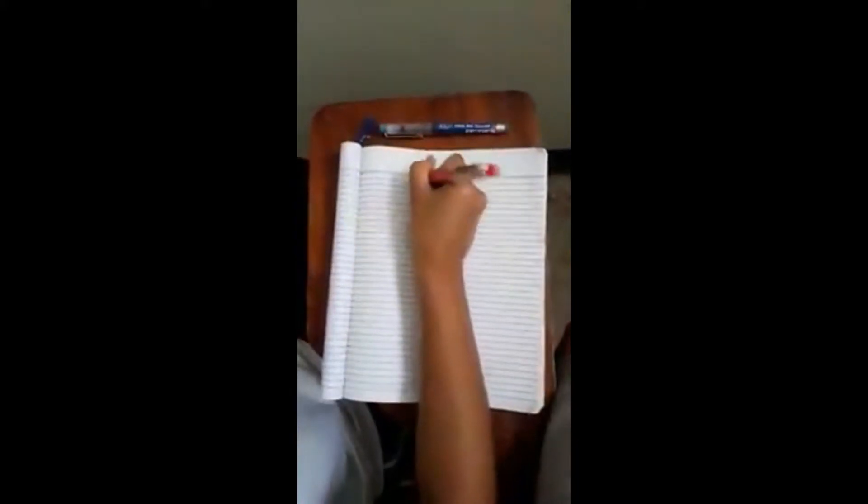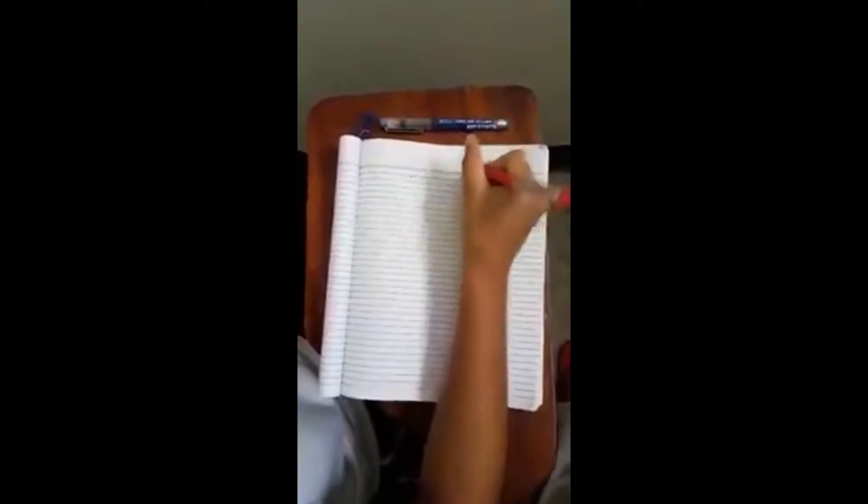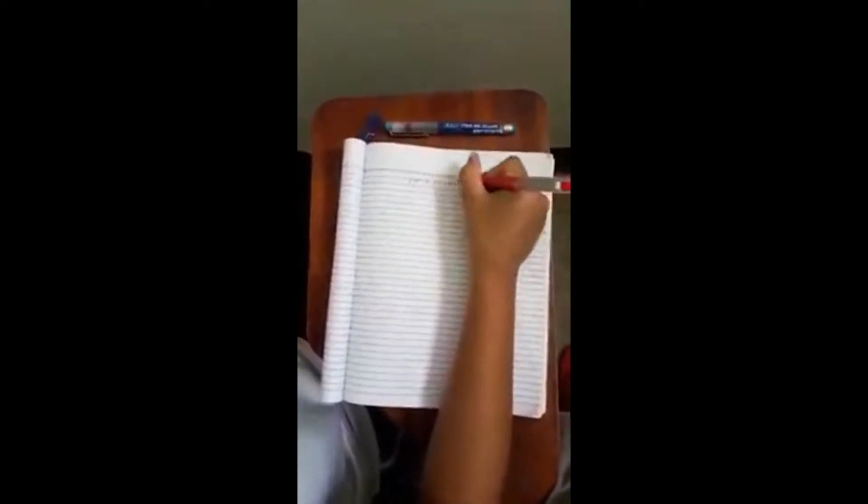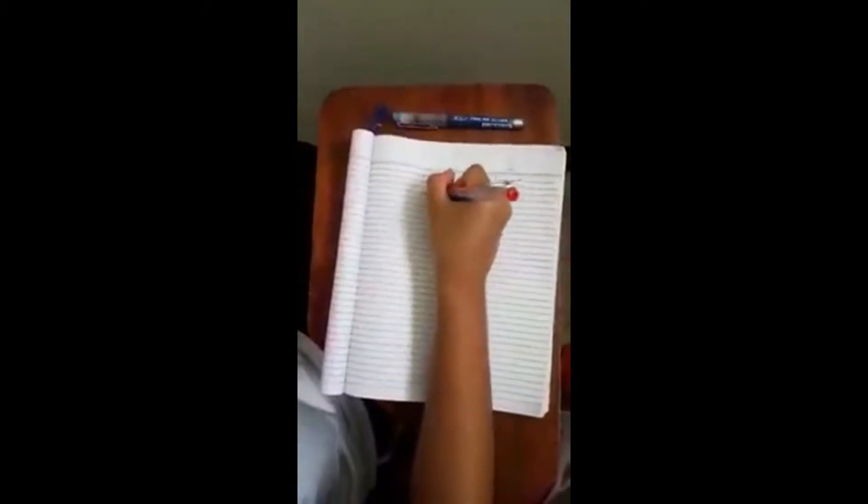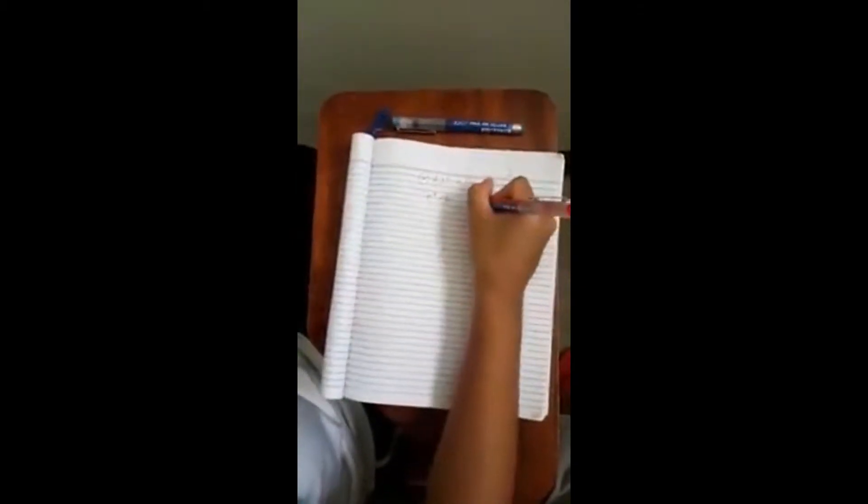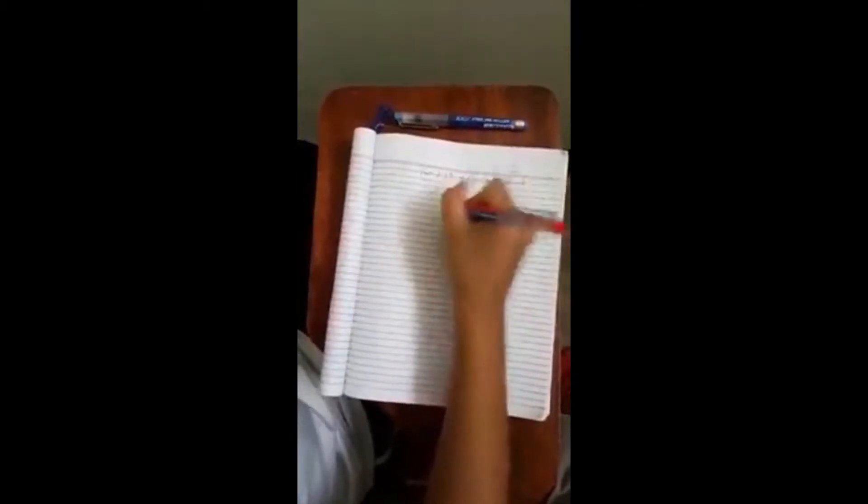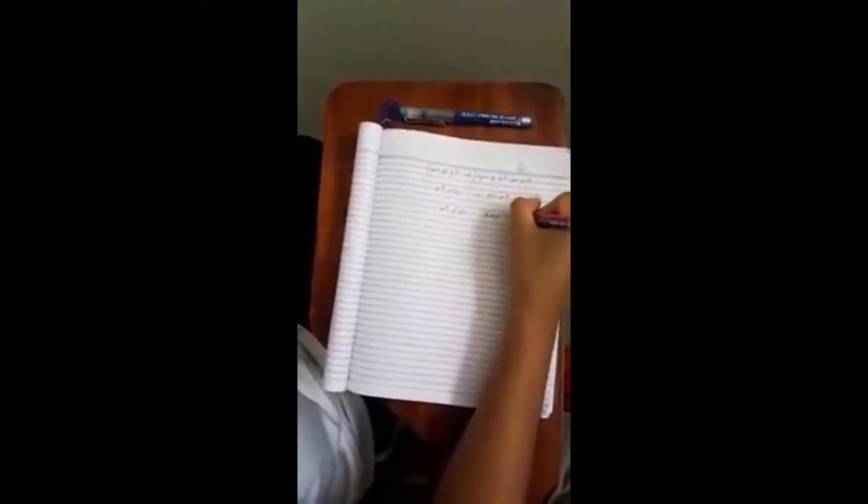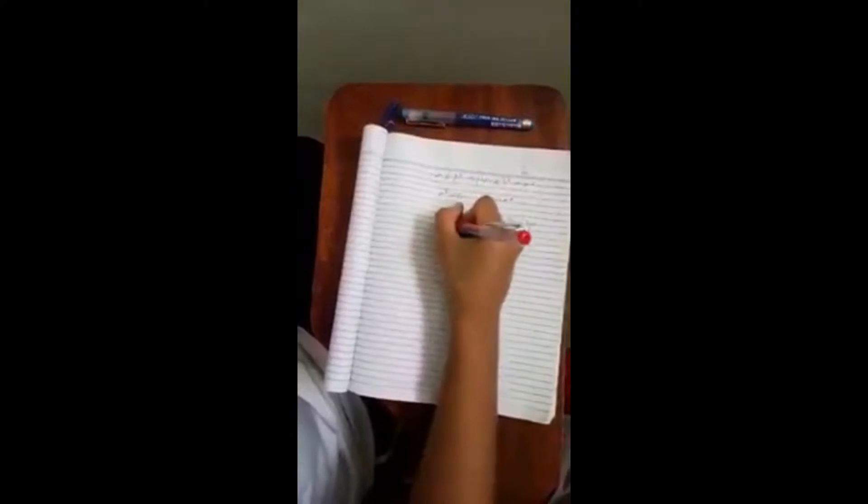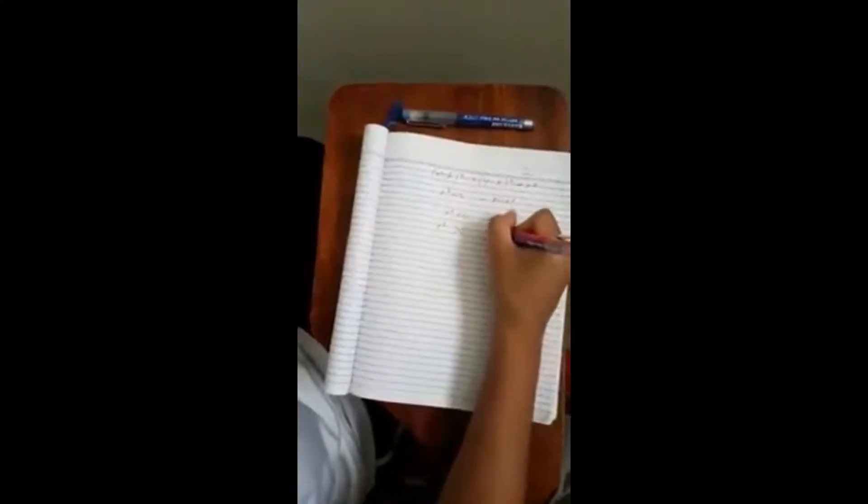The equation x minus h quantity squared plus y minus k quantity squared equals r squared. If r squared is equal to zero, then it is a point. If r squared is less than zero, then it is an empty set. If r squared is greater than zero, then it is a circle.